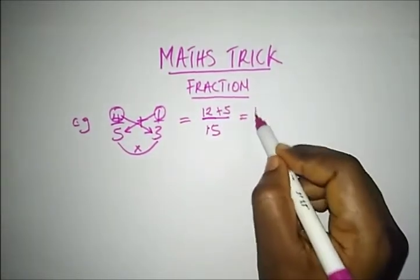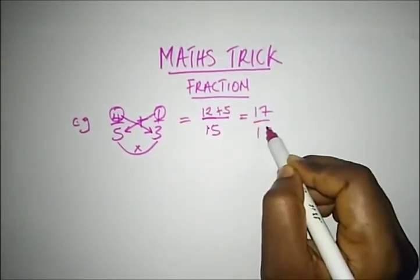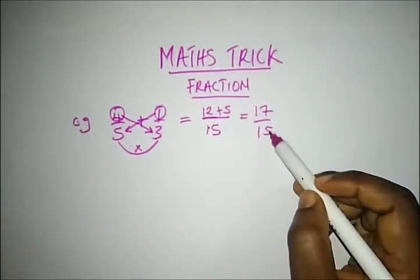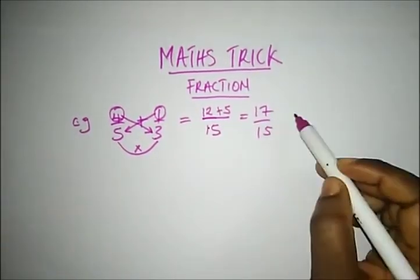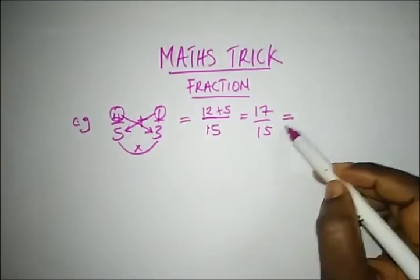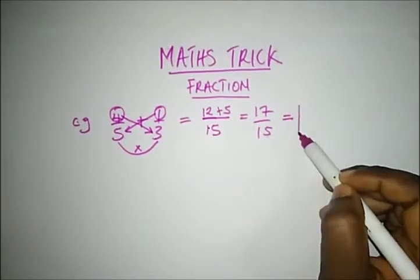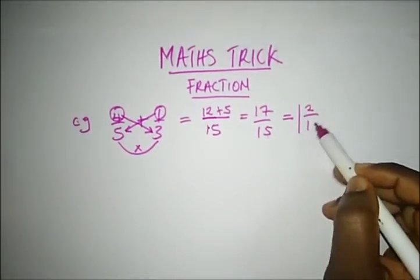So when we add this, we're going to get 17 over 15. Remember that this is an improper fraction, so we have to convert to a mixed fraction, which 15 and 17 is 1 remainder 2 over 15.